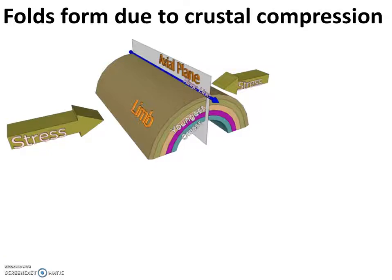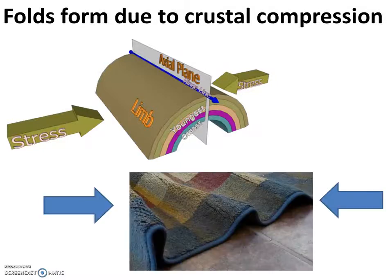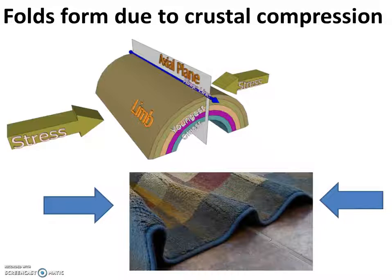As the earth's crust experiences compression, folds can form as the crust is shortened and thickened. This is analogous to pushing on the ends of an area rug and seeing the wrinkles that form. Commonly this occurs along zones of convergence, but can occur within a plate as well, as parts of the plate experience compression.